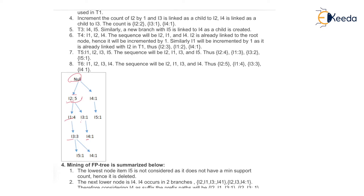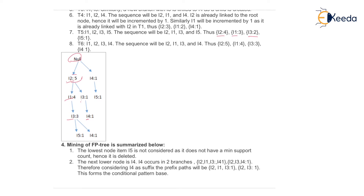In transaction T4 we get I1, I2, and I4; the sequence will be I2, I1, I4. I2 is already linked to the root node so it is automatically incremented by 1. Similarly, I1 will be incremented by 1 as it is already linked with I2 in T1. Thus I2 is 3, I1 is 2, and I4 is 1. In transaction T5 with I1, I2, I3, I5, the sequence is I2, I1, I3, I5; so I2 is 4, I1 is 3, I3 is 2, and I5 becomes 1. In transaction T6 the sequence is I2, I1, I3, I4; the new counts are I2 comes 5 times, I1 comes 4 times, I3 comes 3 times, and I4 comes 1 time.